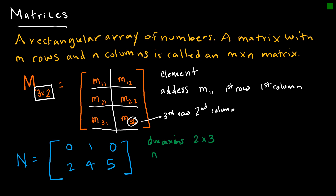If I wanted n₂₃, what would that value be? So n₂₃ means an element in matrix N — this says my second row and my third column. That value is 5. So again, this would be called the address, and 5 is the value of the element.